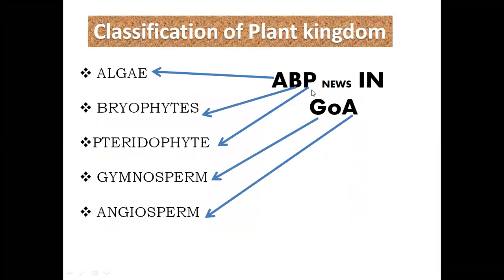So ABP News: A stands for Algae, B for Bryophyte, P for Pteridophyte, G for Gymnosperm, and A for Angiosperm. So the key sentence is ABP News in Goa.